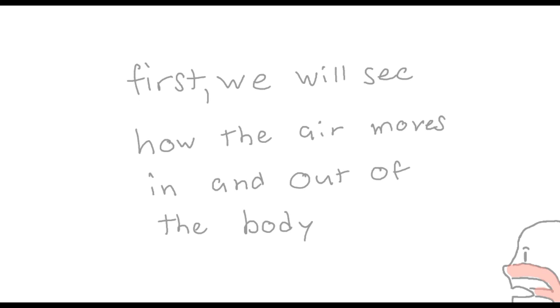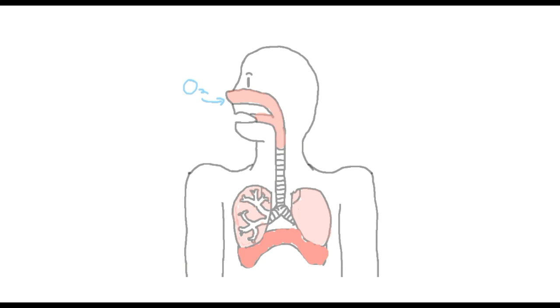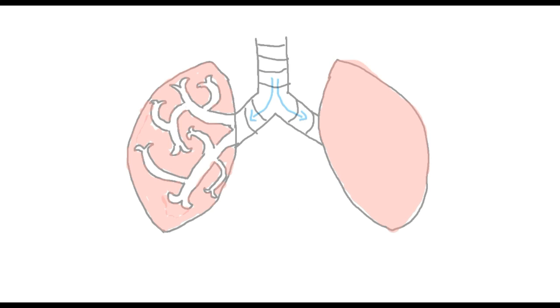First, we will see how air moves in and out of the body. Air first enters the mouth or nose to the back of the throat and finally down the trachea. Air then moves in the two bronchi and then the bronchioles. The air finally reaches the alveoli and the process of gas exchangement occurs.